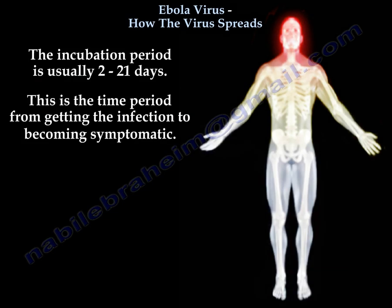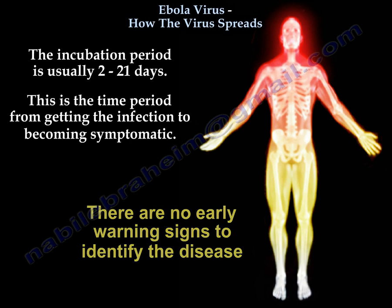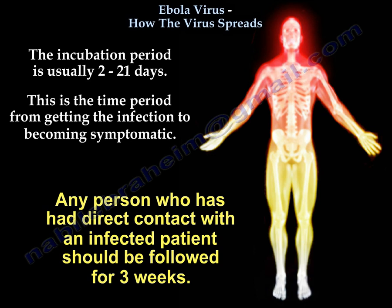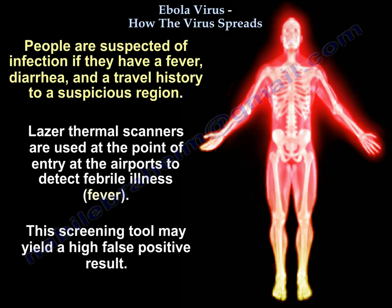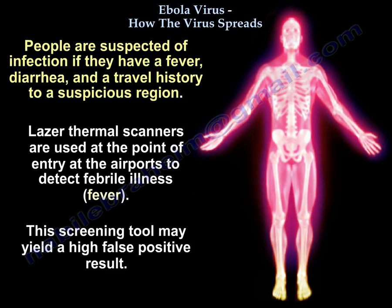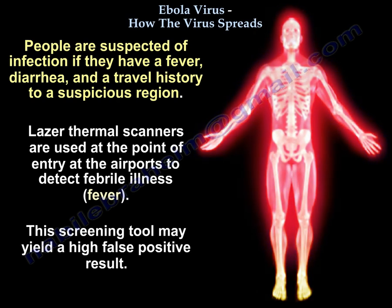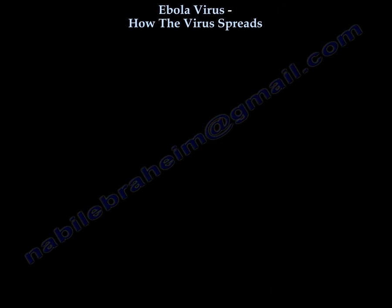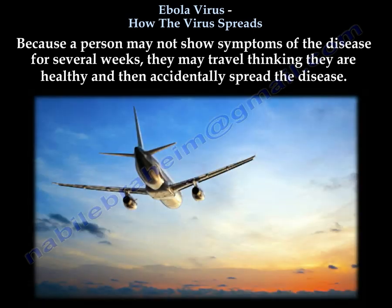The incubation period is usually two to twenty-one days — this is the time from getting the infection to becoming symptomatic. There are no early warning signs to identify the disease. The disease is flu-like. People are suspected of infection if they have a fever, diarrhea, and a travel history to a suspicious region. Thermal scanners are used at airport points of entry to detect febrile illness, though this screening tool may yield a high false positive result. Because a person may not show symptoms for several weeks, they may travel thinking they are healthy and then accidentally spread the disease.